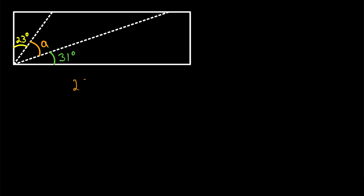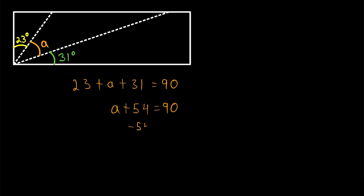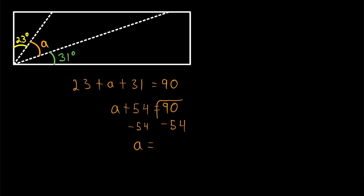We're trying to solve for the missing angle a. We have that 23 plus a plus 31, the sum of these three measures, has to equal 90 degrees. Before subtracting anything, we can add the 23 and 31 together — order of addition doesn't matter. 23 plus 31 is 54, so we have that a plus 54 is equal to 90. Subtracting 54 from both sides, we get a equals 90 minus 54, which is 36 degrees.